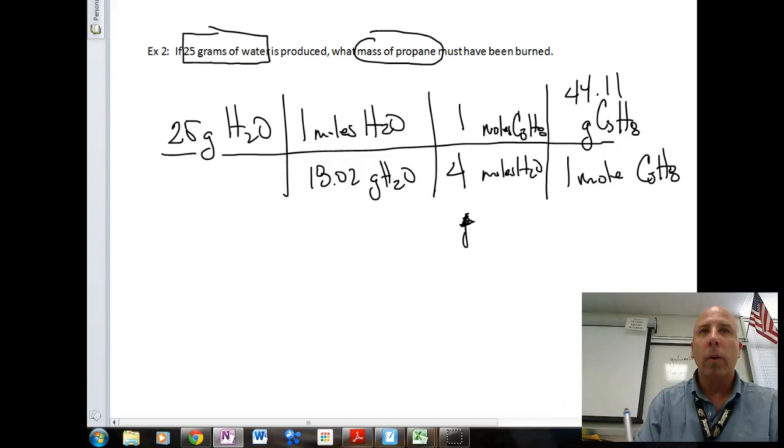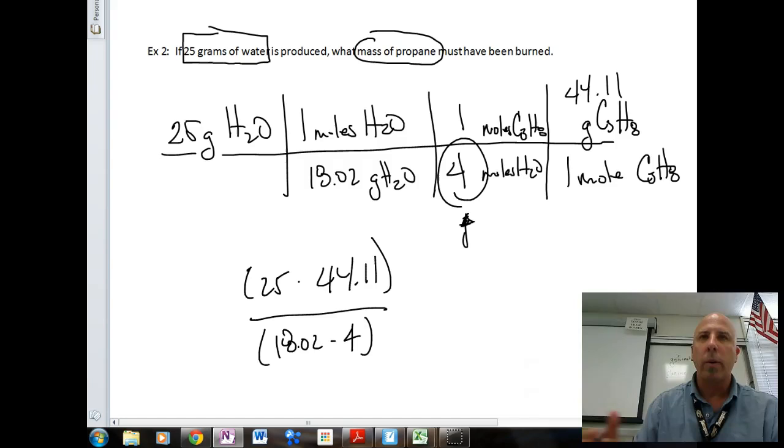So essentially, our setup on our calculator is going to be 25 multiplied by 44.11, all divided by 18.02. And don't forget that four down there at the bottom. A lot of times students will forget that coefficient, and that will throw your calculations off. So we have 44.11 multiplied by 25, divided by 18.02 times four.